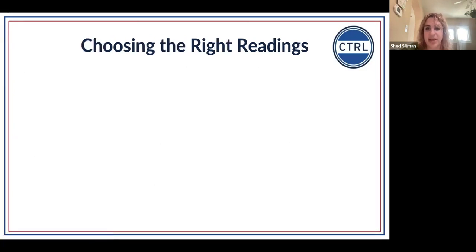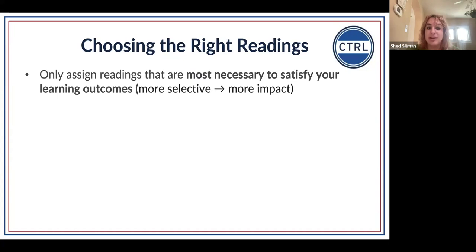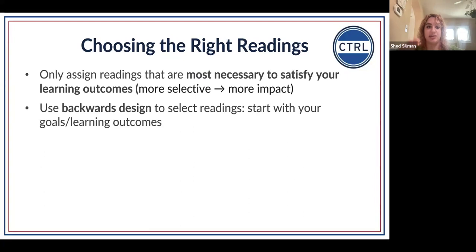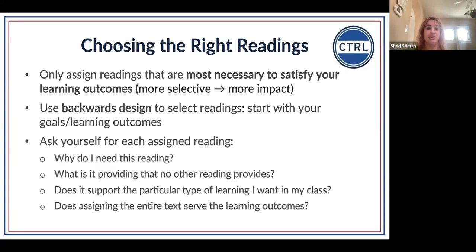We already talked about honoring learning goals and being transparent. I want to come back to a backwards design approach: as much as possible, assign readings that are most necessary to satisfy your learning outcomes. The more selective we are, the more of an impact those readings can have on students. Really look at those learning outcomes — what do you want to achieve with students this semester? Those of you who have engaged in our Course Design Institute will be familiar with backwards design.